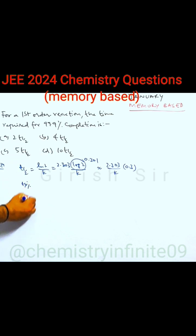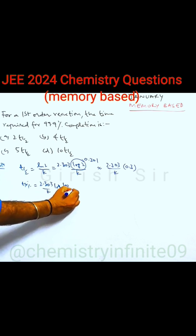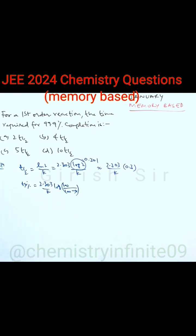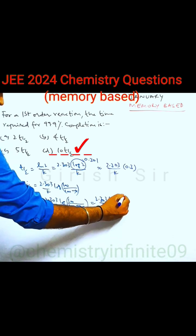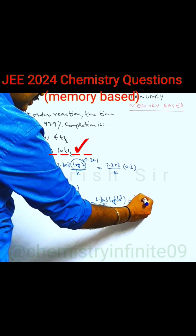Now, the next result you can use is the time taken for x percent completion of a first order reaction. Using this expression, you will be able to find t 99.9 percent. Using property of log, I can write this